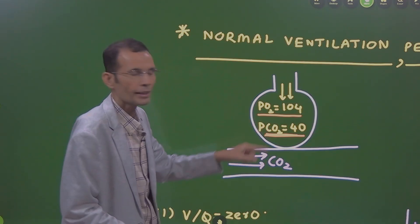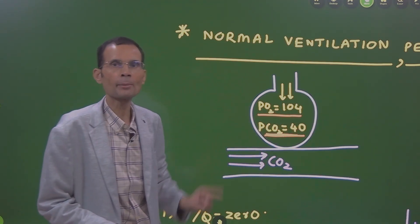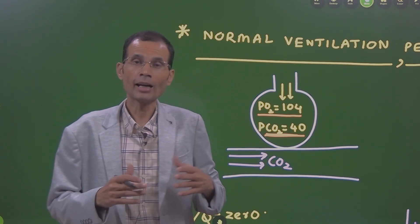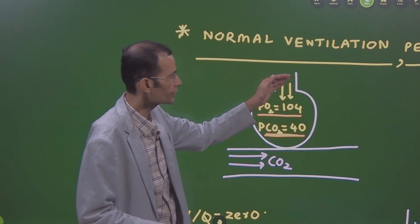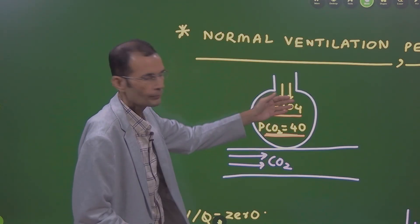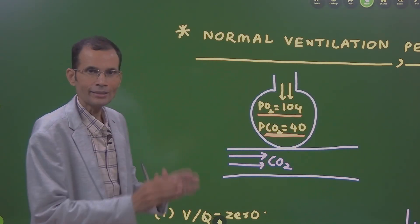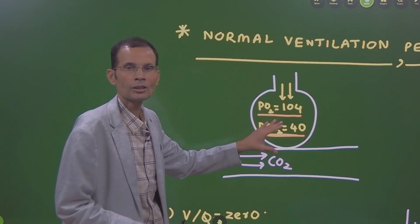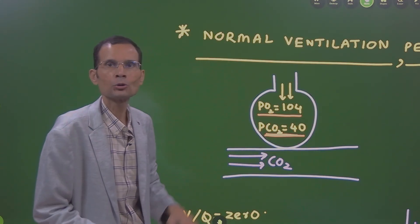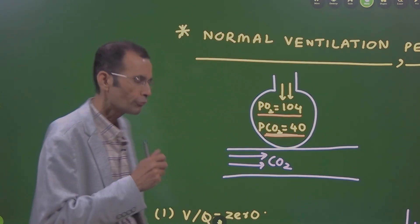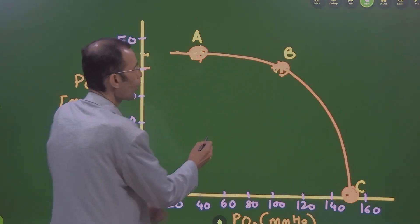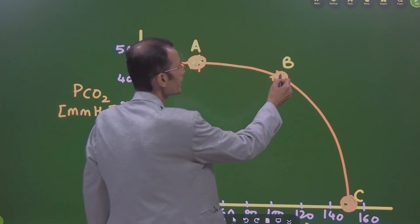When ventilation and perfusion are both normal, alveolar air PO2 will be 104 mmHg and PCO2 will be 40 mmHg. We are assuming that oxygen and carbon dioxide are getting exchanged at the normal rate between alveolus and blood. Point B is depicting this normal relationship.